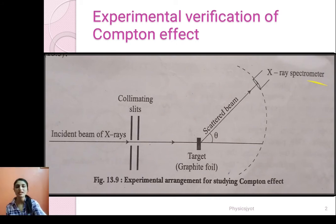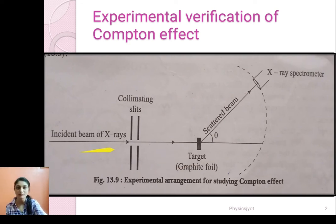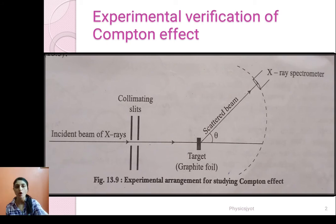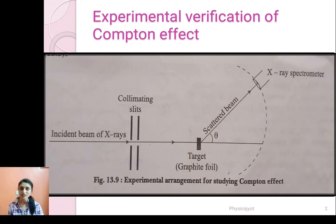Here you can see the experimental arrangement for studying Compton effect. There is an incident beam of x-rays which is made to pass through collimating slits. You can see two slits and it is made to fall on a target. The target which is used here is graphite foil.